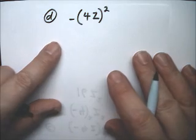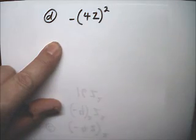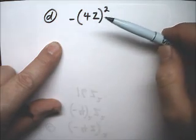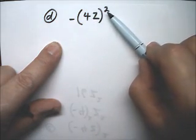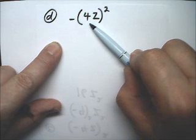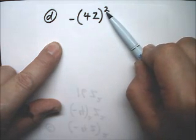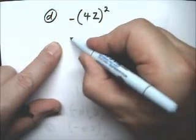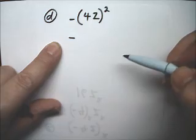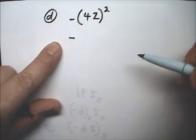And D is negative 4 z squared. It looks like almost the same problem, but it's really not. The exponent only pertains to what's immediately in front of it. This negative sign out here has nothing to do with the exponent. So I'm just repeating the negative sign because it's got nothing to do with the exponent.